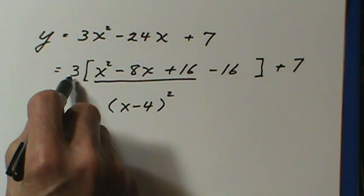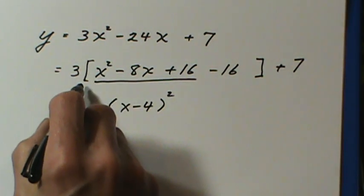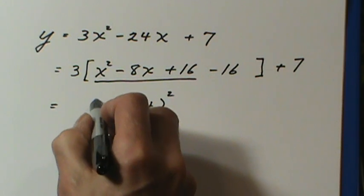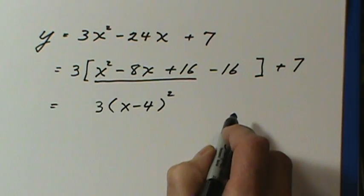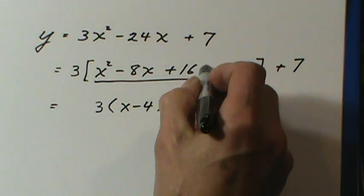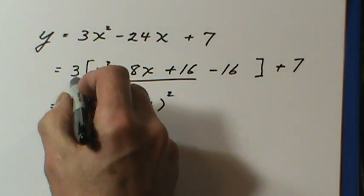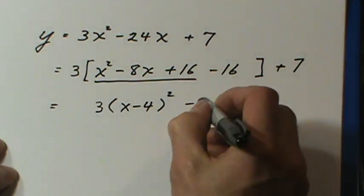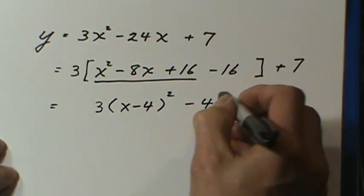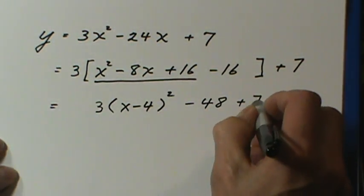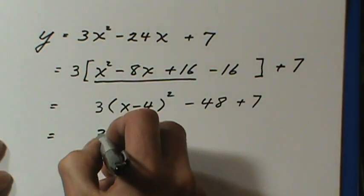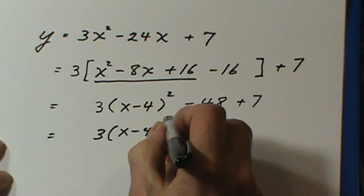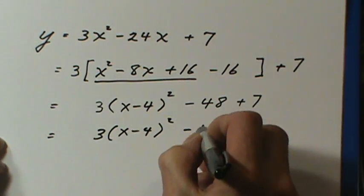Now, there's a three in front. Since I'm not going to write the square brackets anymore, I'm bringing the three back in. The three will go in front of the x minus four squared. This was sitting here all by itself, so the three comes in, multiplies the negative sixteen, gives us negative forty-eight plus seven. And we'll just simplify that last line: three times x minus four squared minus forty-one.